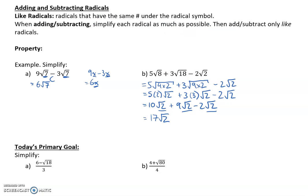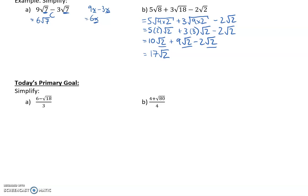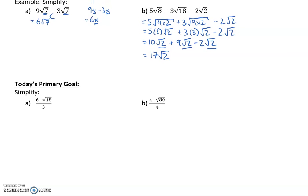The property we've used: c√a times d√b equals cd√(ab). We multiply c times d and a times b under the square root. The ultimate goal today is to simplify expressions that look even more complex, with a fraction involved. So with that in mind,